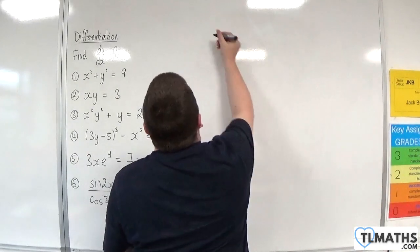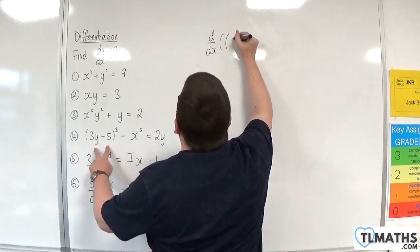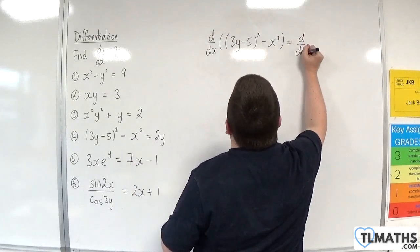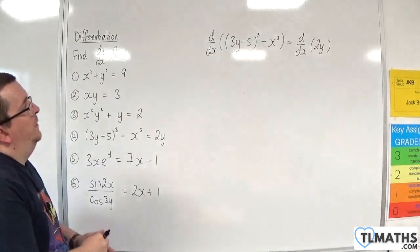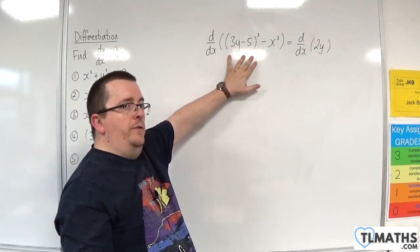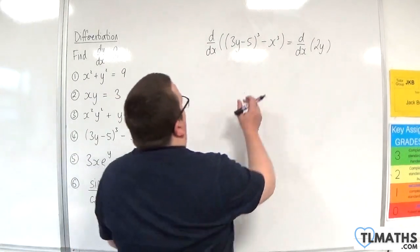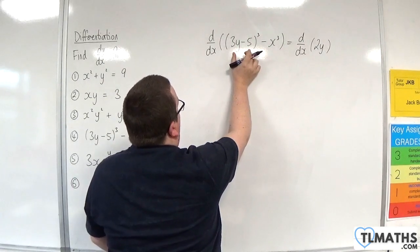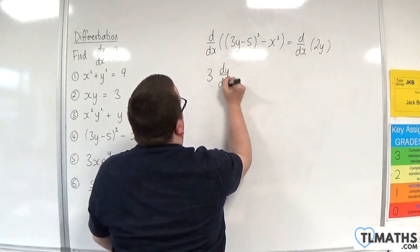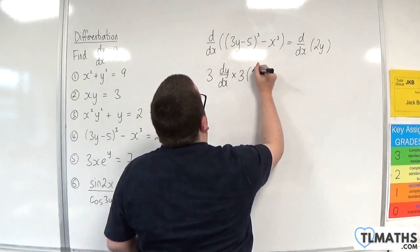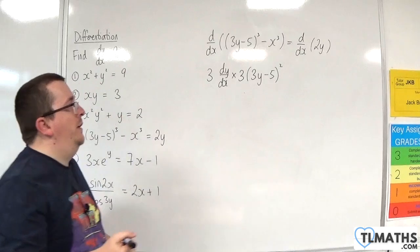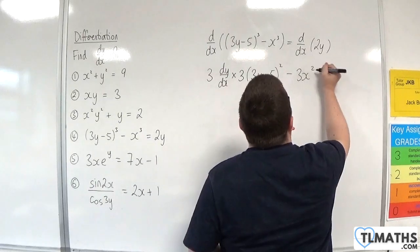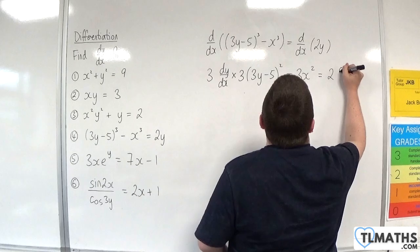Number 4: d by dx of (3y minus 5) cubed minus x cubed equals d by dx of 2y. To differentiate (3y minus 5) cubed I use the chain rule — the derivative of the inside comes outside. The derivative of the inside is 3 dy by dx, the power comes down to the front, and I reduce the power by one. Minus x cubed differentiates to minus 3x squared, and 2y differentiates to 2 dy by dx.